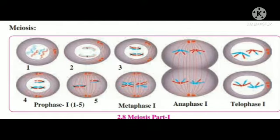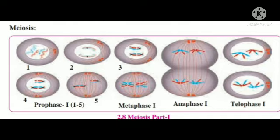Hello students, in Standard 10, subject Science 2, chapter Life Processes in Living Organisms. In this chapter we are learning about mitosis and meiosis. In this segment we are learning about meiosis. Meiosis, also known as ardhasutri vibhajan, is divided into two parts — meiosis first and meiosis second.